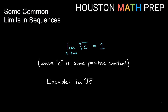We have a similar result when taking the nth root of a constant — that also equals 1. Before, both the inside and the index changed as n; here just the index changes. For example, the limit of the nth root of 5 equals 1. We can write this as the limit of 5 to the 1 over n, and as n gets large the exponent goes to 0, giving 5 to the 0, which is 1. Any positive constant gives a limit of 1.